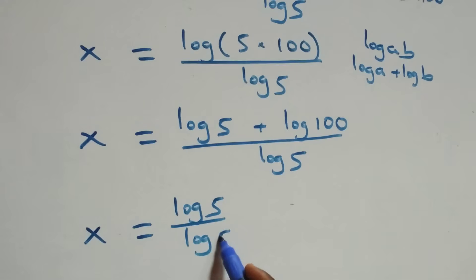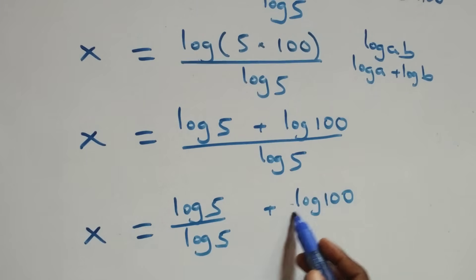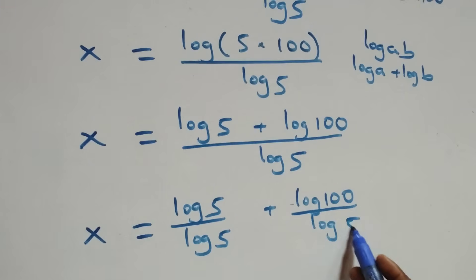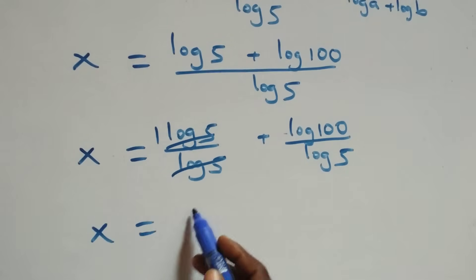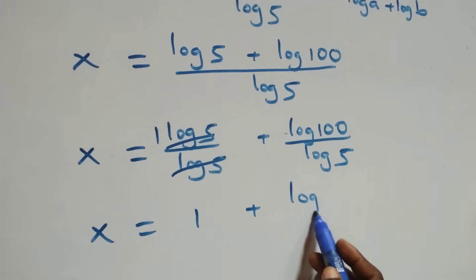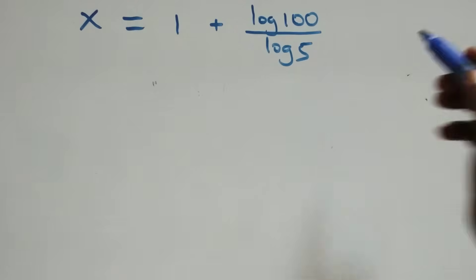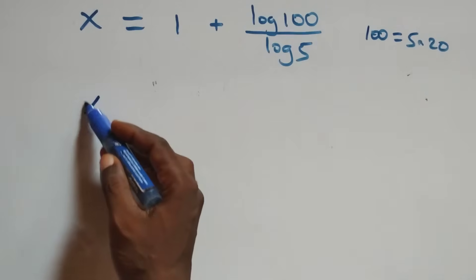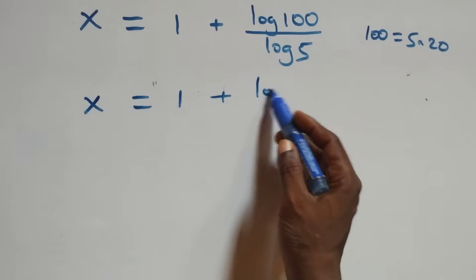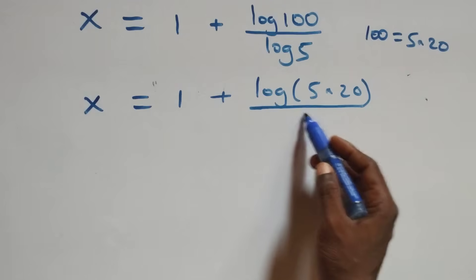We have x equals log 5 plus log 100 over log 5. Log 5 over log 5 cancels, leaving 1, which implies x equals 1 plus log 100 over log 5. We then write 100 as 5 times 20, so x equals 1 plus log(5 times 20) over log 5.